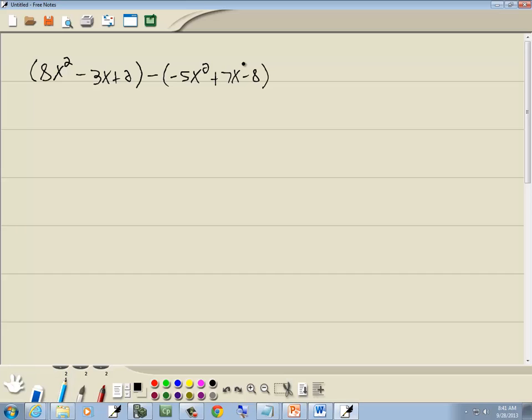Now, first thing we need to do is get rid of the parentheses. Our first polynomial, the parentheses around it doesn't do anything, so I can just drop them. So we got 8x² minus 3x plus 2.